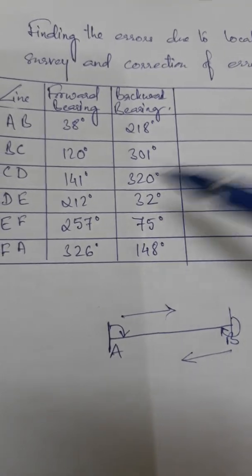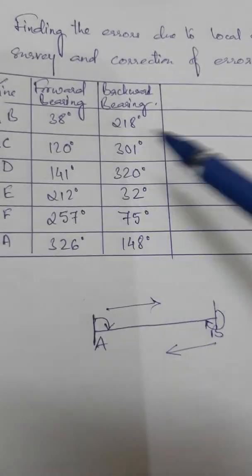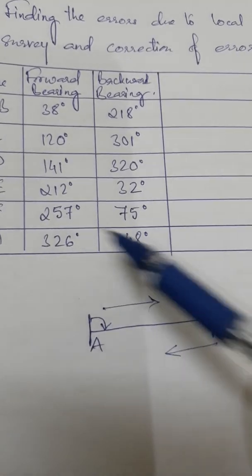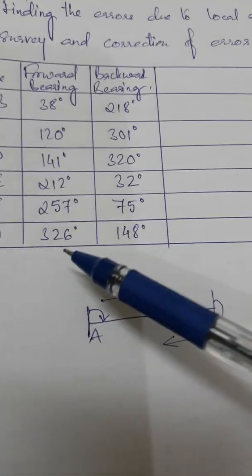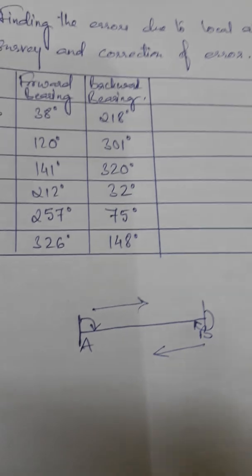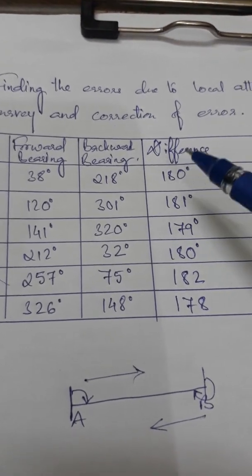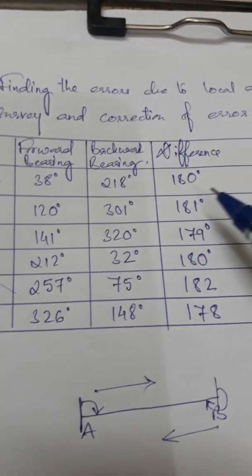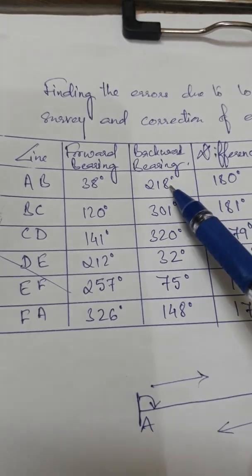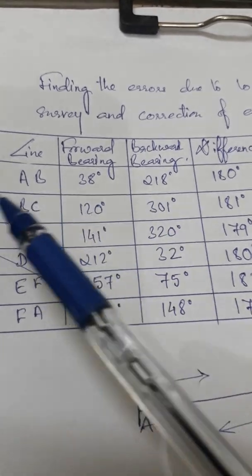Let us find the difference between the forward and backward bearings. While finding the difference, we can subtract the forward bearing from the backward bearing or vice versa, depending on the greater value. For line AB, I have subtracted and got 180 — so both the forward and backward bearings for line AB are correct.